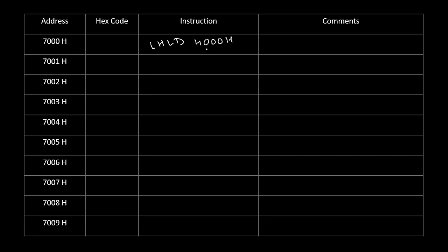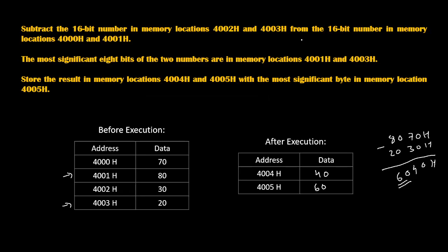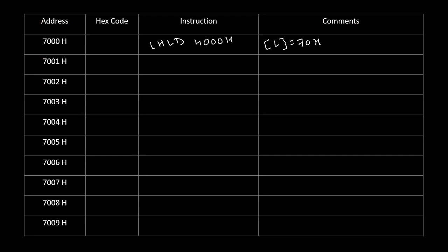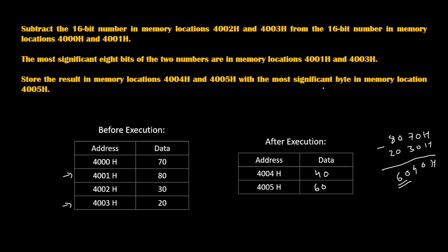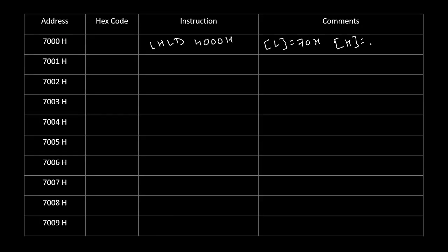Because of LHLD 4000H, the content of 4000H gets copied into the L register. We saw that 4000H held 70H, so L will become 70H. The next location is 4001H, so its content goes into the H register — H will become 80H. Now we have the first 16-bit number 8070H in the HL register pair, which is needed for 16-bit subtraction using one of the three register pairs: HL, DE, or BC.